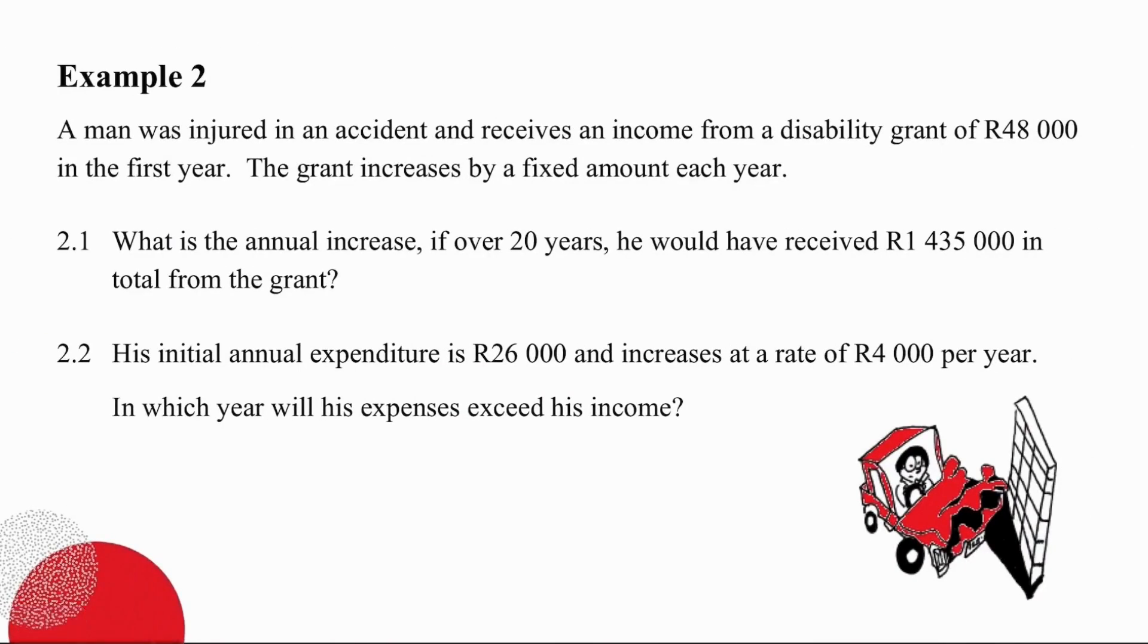In the second question, we have a man injured in an accident who receives an income from his disability grant of 48,000 rand in the first year. The grant increases by a fixed amount each year. This is very important. We are going to answer two questions based on that information and we'll take them one at a time.